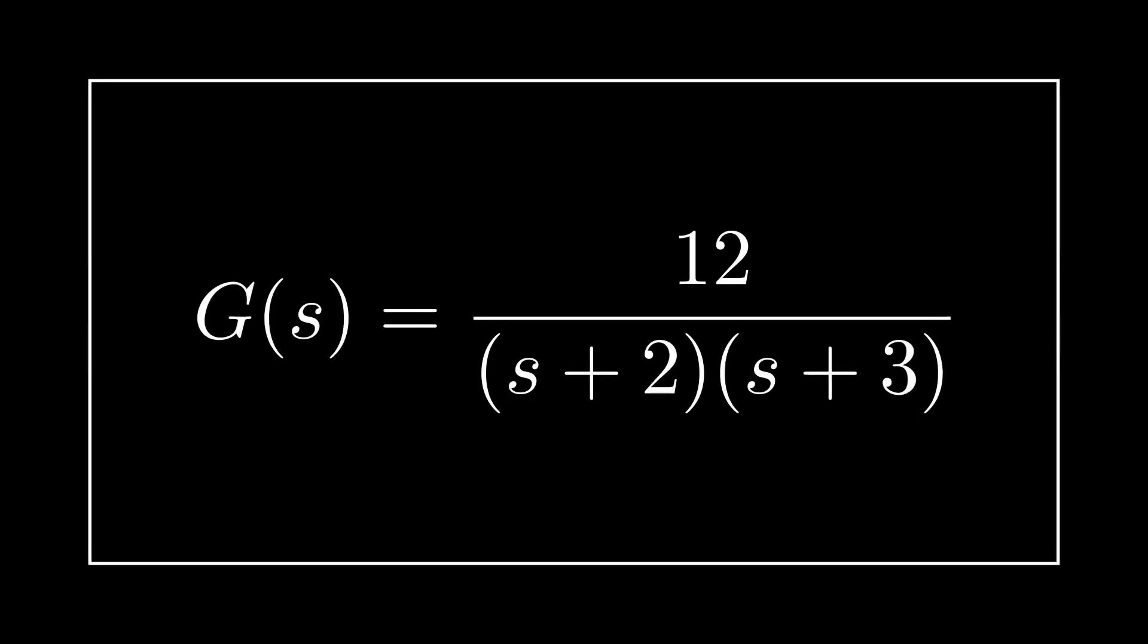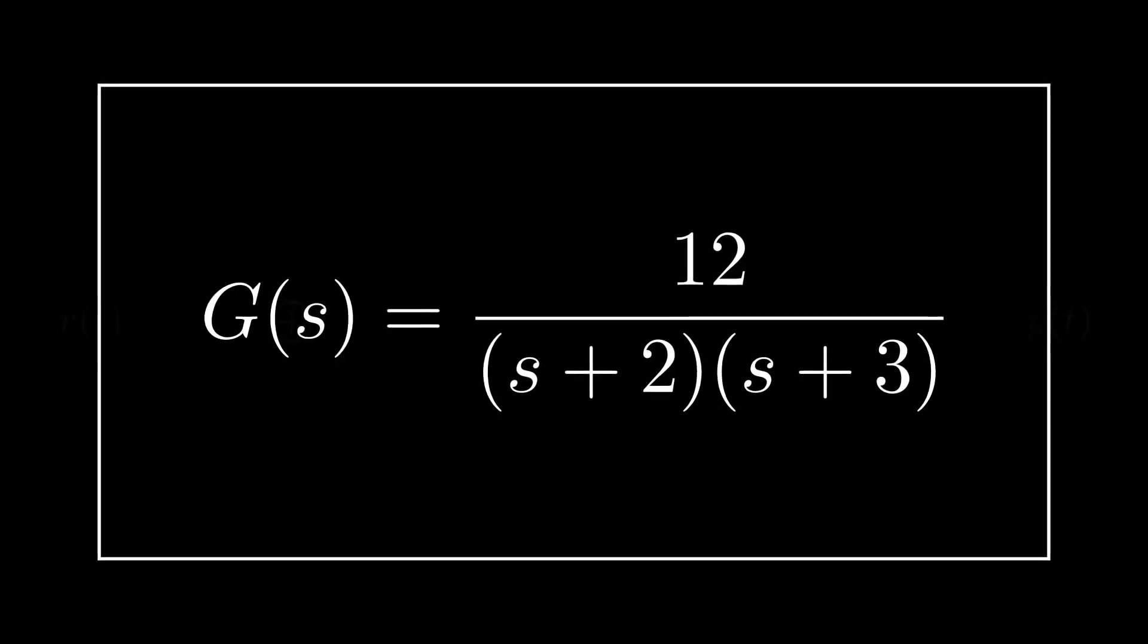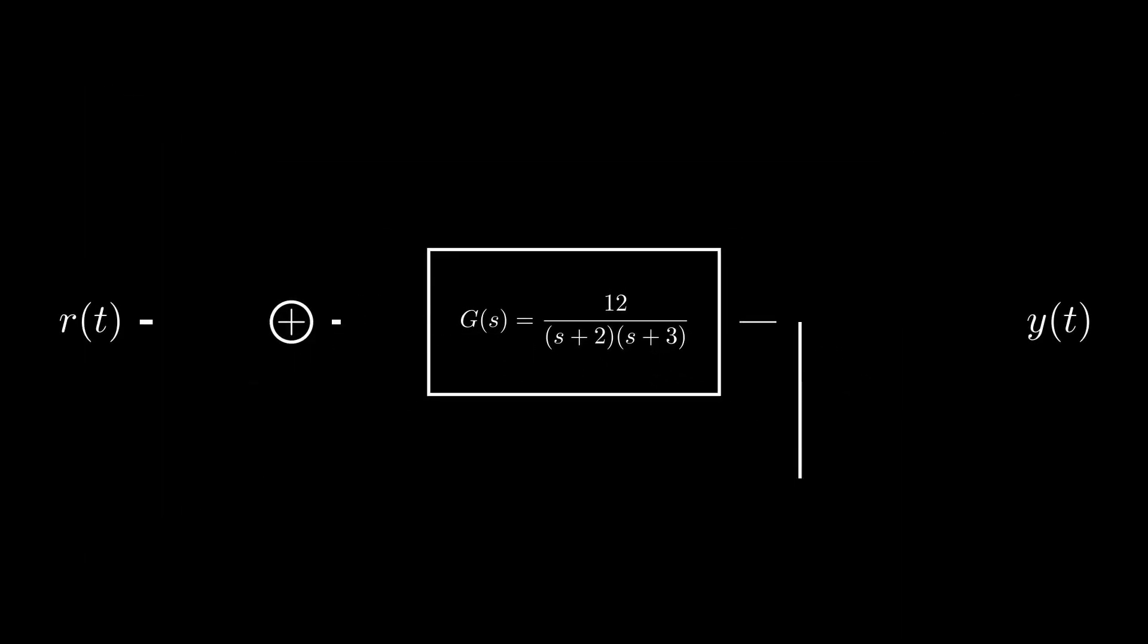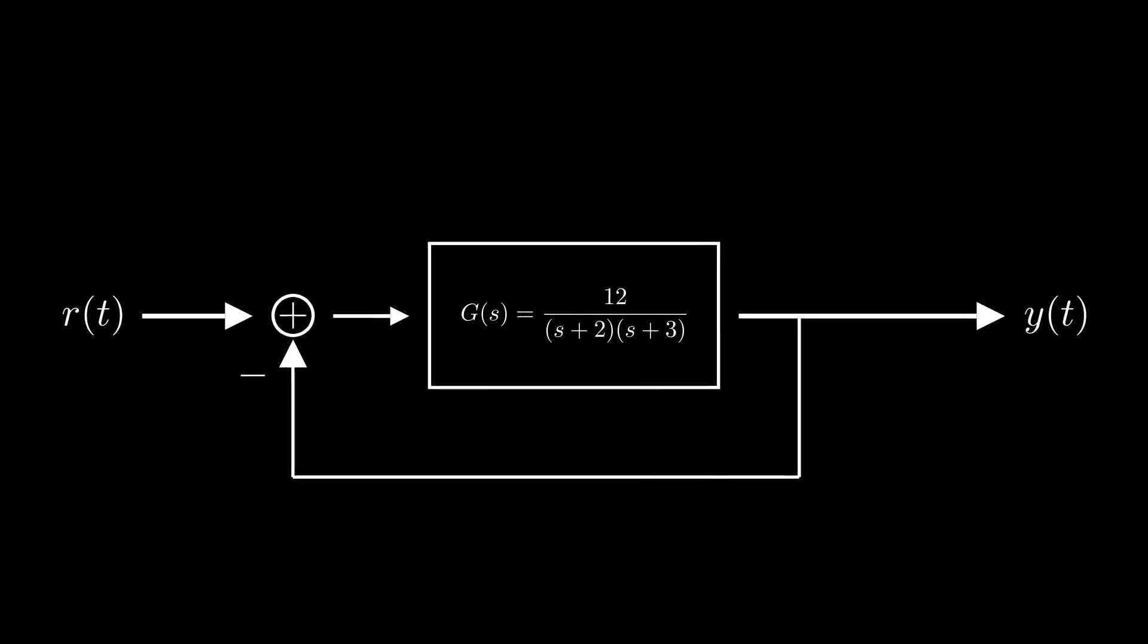Hello, think about a forward gain transfer function represented as 12 over s plus 2 times s plus 3, integrated to a system featured in a unity gain feedback path.